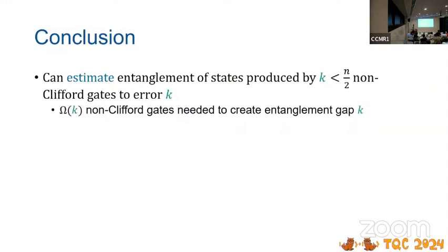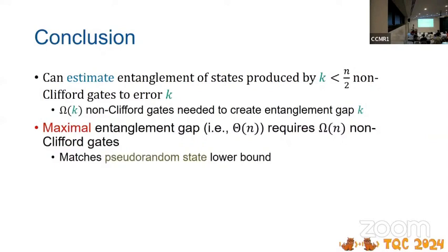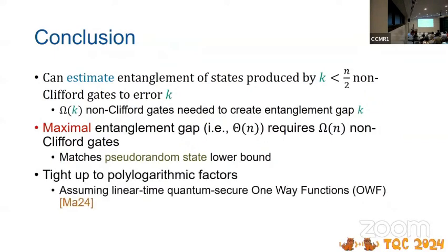So what are the conclusions? We can estimate the entanglement of states produced by some not too many Clifford gates, like a linear number basically. The corollary of this is that around omega k non-Clifford gates are needed to create an entanglement gap of k. We were originally trying to figure out how many non-Clifford gates we need to create pseudo-entanglement. The largest amount of pseudo-entanglement you can create is linear. When the maximum entanglement gap is linear, then this matches the pseudo-random state lower bound, which is the goal. Also, this is tight up to polylogarithmic factors. If you assume the existence of linear time quantum secure one-way functions, then Fermi-Ma has an upcoming result that can produce pseudo-entanglement states in linear times polylog time.